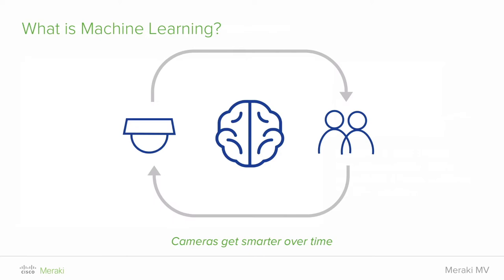I also used the term machine learning. It simply means the cameras are going to get smarter over time. As more and more people deploy these cameras, we'll be able to collect some of that metadata and feed it back into our software so it gets better at recognizing what is a person and what's not. So we're going to see increasing accuracy over time.